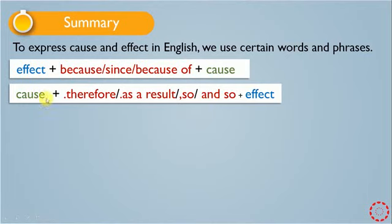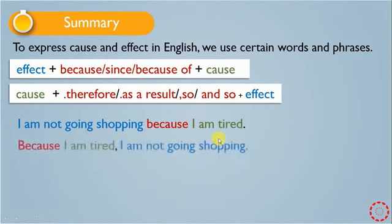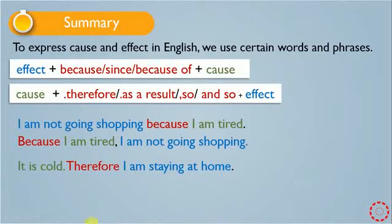For example: 'I am not going shopping because I am tired' — this is the effect and 'I'm tired' is the cause. We can change the position: 'Because I'm tired, I'm not going shopping.' An example for the second group: 'It is cold, therefore I'm staying at home' — 'I'm staying at home' is the effect and the cause comes before 'therefore.' And that's all — thanks for watching and listening.